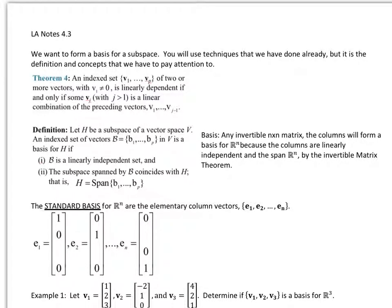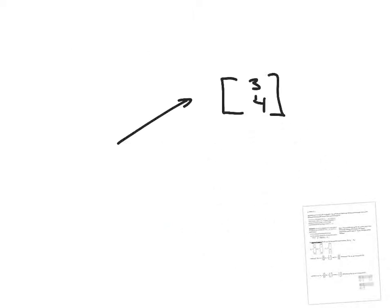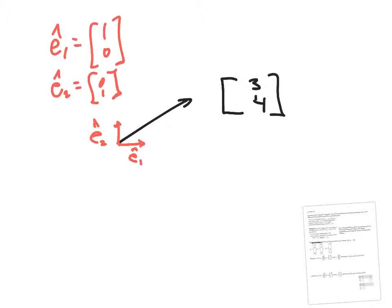Hi, this is linear algebra notes 4.3. We want to try to form a basis for a subspace. Let me give you a quick introduction before we get into some of the heavier ideas. If I take the vector (3, 4) and want to represent it in the form of two basic vectors — if I have e1-hat and e2-hat, the vectors (1,0) and (0,1) — I can take (3,4) and write it in terms of e1 and e2 using those unit vectors.